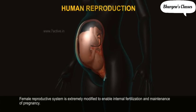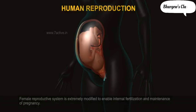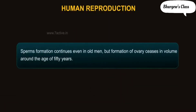The female reproductive system is extremely modified to enable internal fertilization and maintenance of pregnancy. Sperm formation continues even in old men, but formation of ova ceases around the age of 50 years.